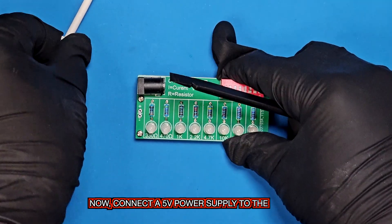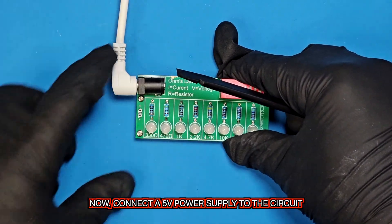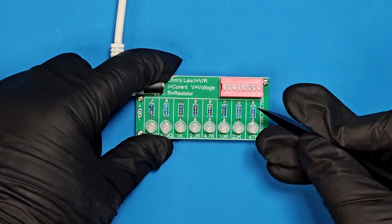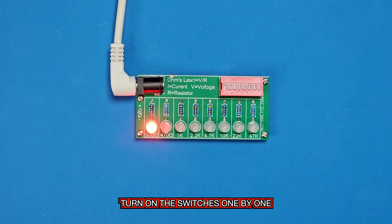Now, connect a 9-volt power supply to the circuit. Then, turn on the switches one by one.